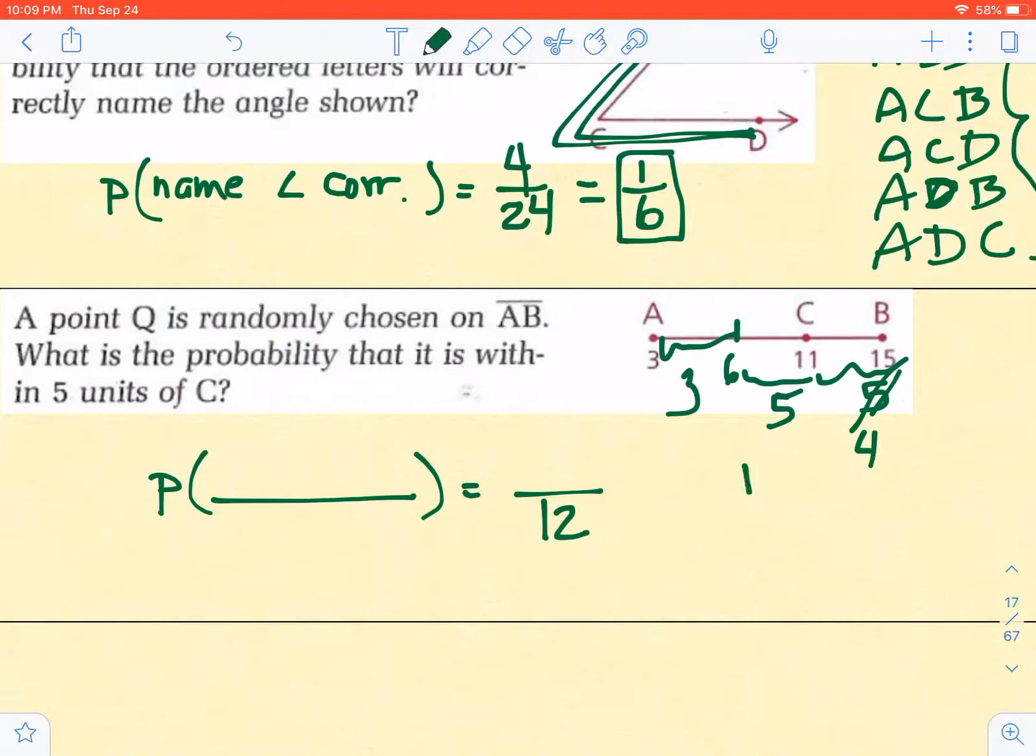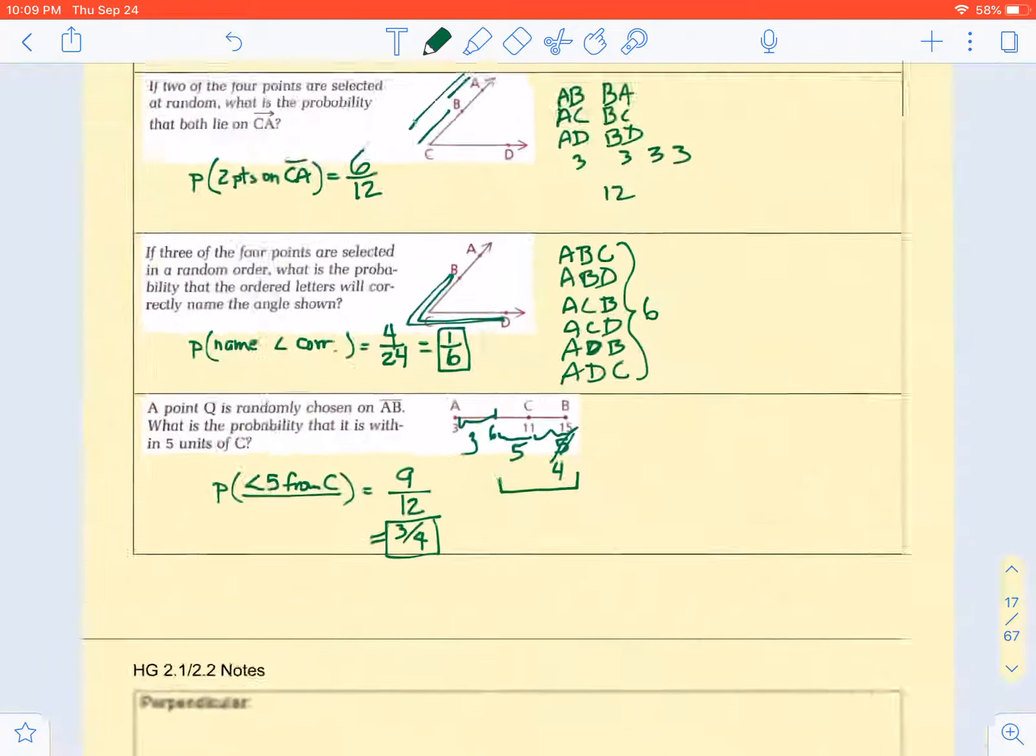And then if I look at what's my distance for being successful to be less than five from C, looks like you've got five plus four, you get nine, which in simplified form is three-fourths. All right? Hope that section...